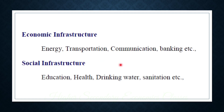We will talk about infrastructure. Examples of economic infrastructure and social infrastructure: economic infrastructure includes energy, transportation, communication, and banking. Social infrastructure includes education, health, drinking water, sanitation, etc.